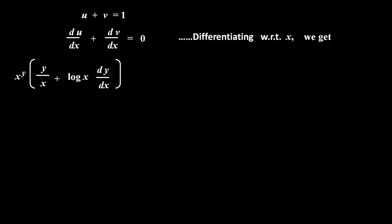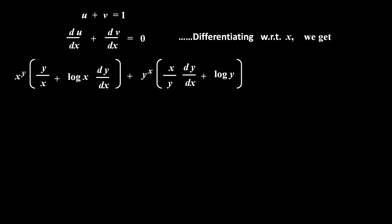Now we have the equation u plus v equal to 1. Since u and v are functions of x, differentiating with respect to x gives du by dx plus dv by dx equal to 0. Substituting the values of du by dx and dv by dx, we get x raised to y into the bracket y upon x plus log x into dy by dx, plus y raised to x into the bracket x upon y into dy by dx plus log y, which equals 0.